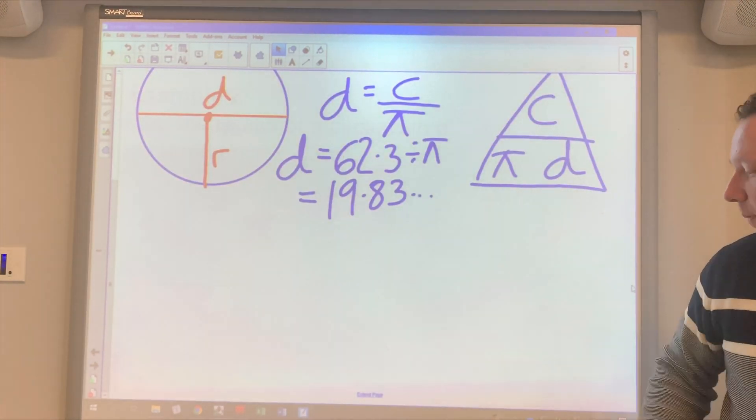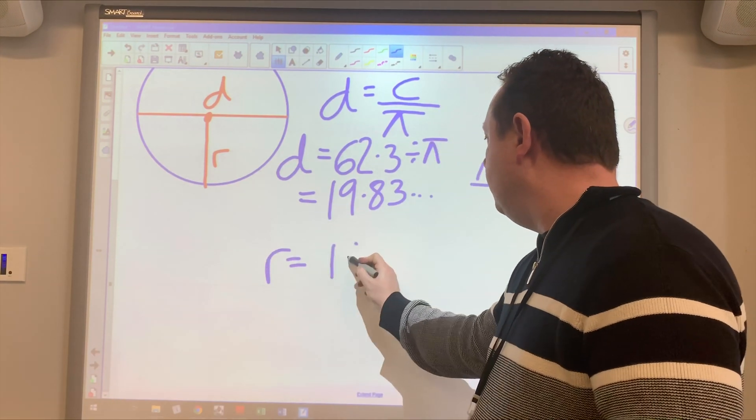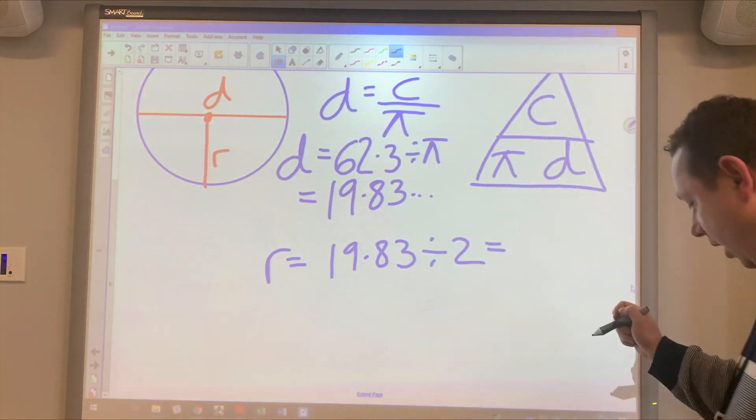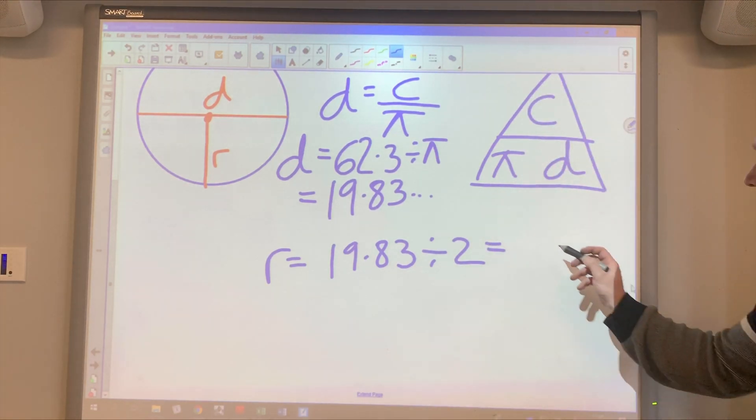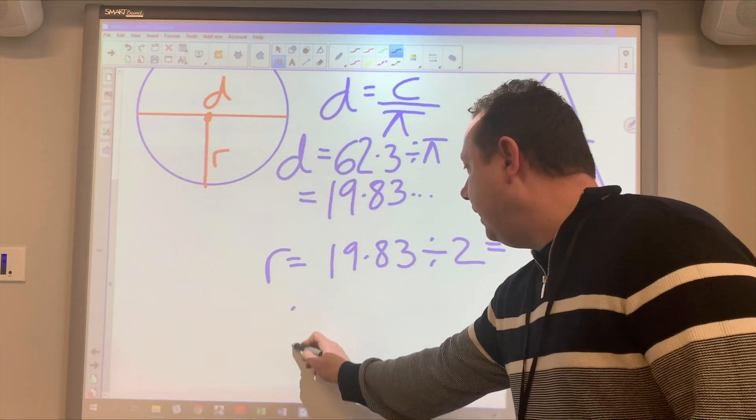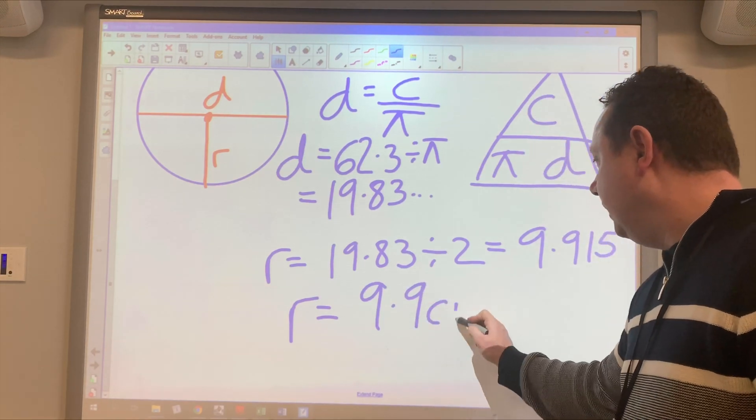So now I'm going to find my radius just by halving. So I write down the radius. R equals 19.83. Divide that by two. The unrounded answer is 9.915. So to one decimal place, R is going to be 9.9 centimeters.